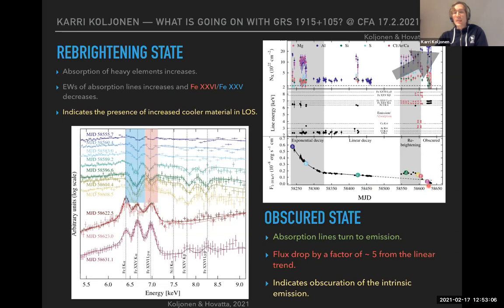When the source then goes to the obscured state, the flux drops by a factor of five from the linear decay extrapolated from the decay profile, or even more if you consider the re-brightening state.